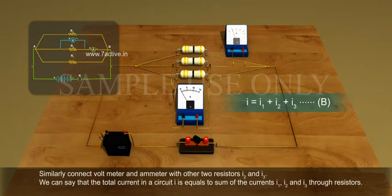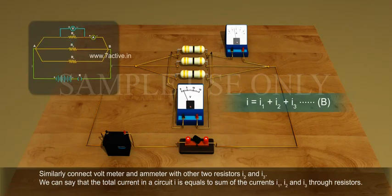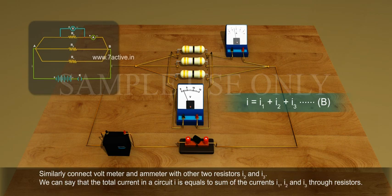Similarly, connect the voltmeter and ammeter with the other two resistors to measure I2 and I3. We can say that the total current in the circuit I equals the sum of the currents I1, I2, and I3 through the resistors.